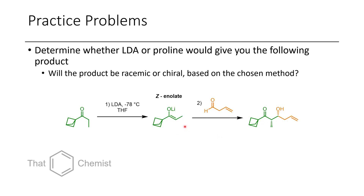If you use proline, you're going to get the E-enolate, or E-enamine rather. So you have to choose an appropriate method to get the desired product. If you want to get a syn product, even though this is a mixture of enantiomers — because this and its mirror image will both be formed as the enolate and the electrophile are both achiral — you have to use a lithium enolate.